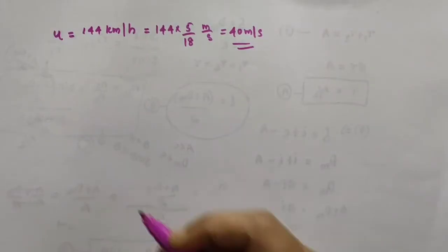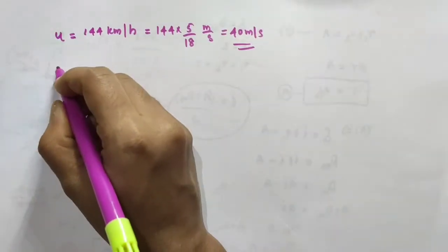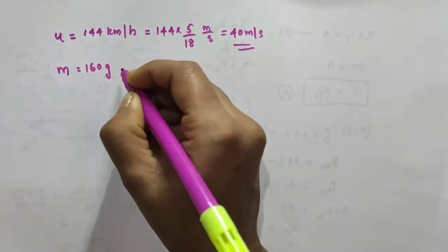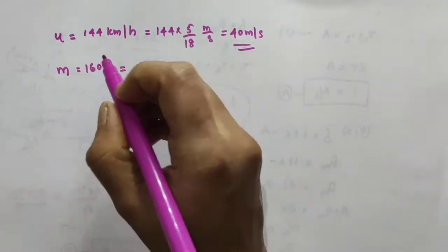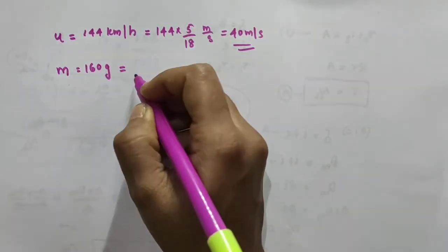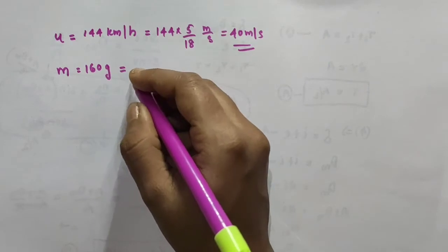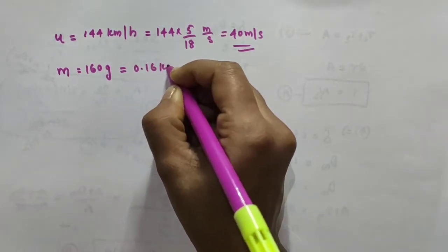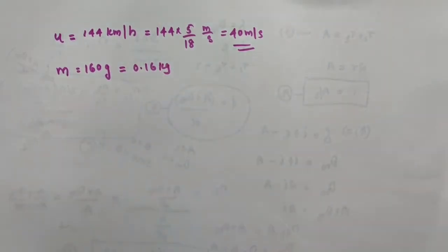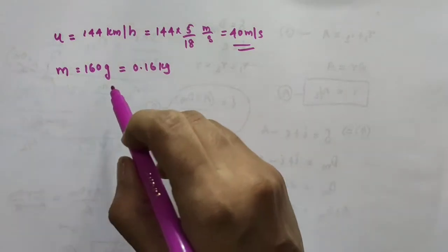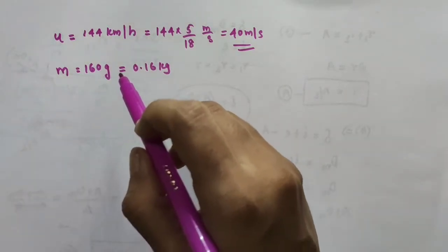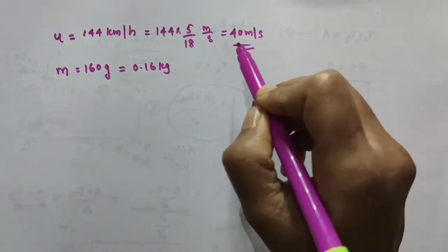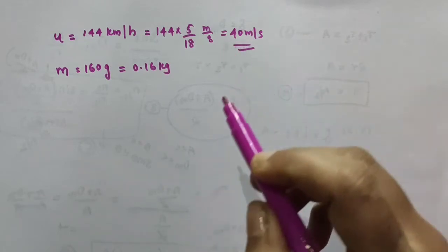Let the mass of the cricket ball be M = 160 grams. Converting this into the SI unit kilogram, we get 0.16 kilogram. So we have the mass of the ball as 0.16 kg and the initial velocity of the fast moving cricket ball as 40 meter per second.